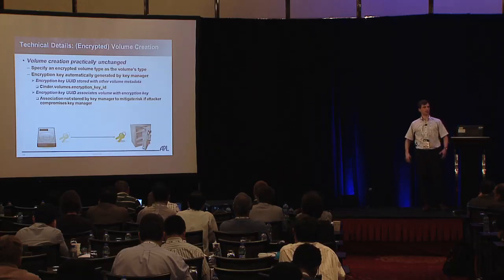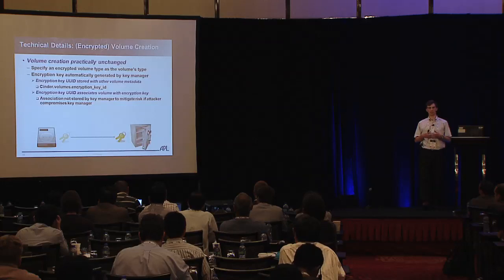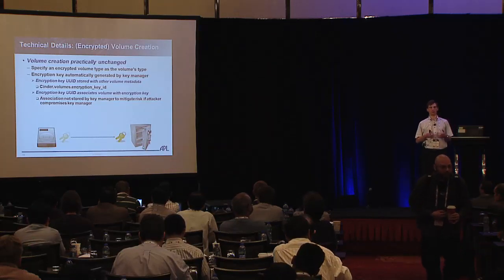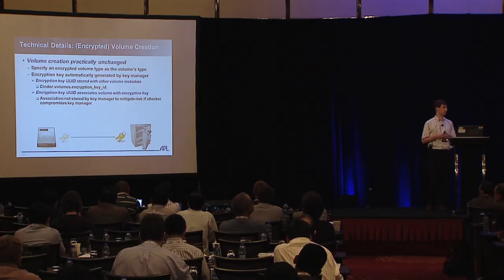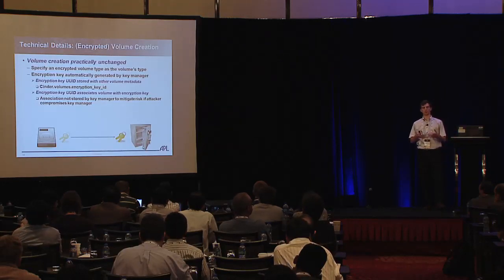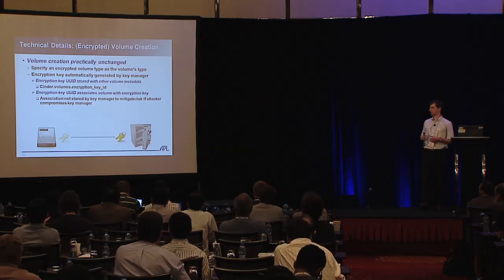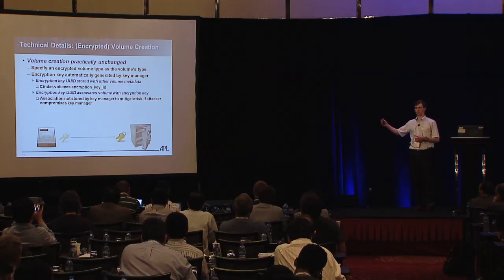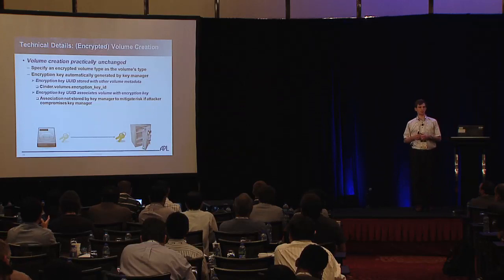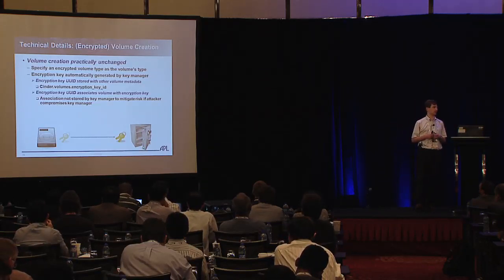Once we have an encrypted volume type, the process of creating an encrypted volume is actually unchanged from creating a regular volume — all you do is specify an encrypted volume type. The encryption key will be automatically generated by the key manager: we send a request to Barbican to create a key, and once created it passes back the key UUID so we can identify that key in the future. The block device merely stores a pointer to the actual key — the actual key is managed exclusively by the key management appliance. So even if you attack the Cinder service, you can't access the key directly.